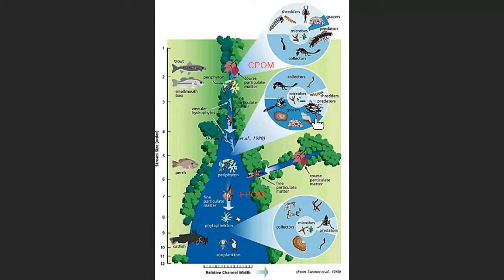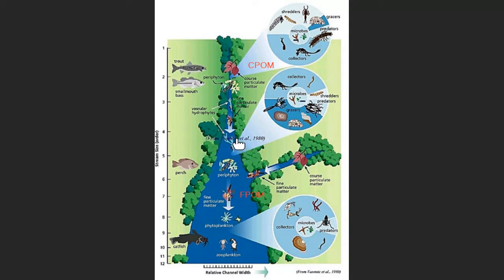Grazers are insects that graze on algae growing on substrate. You need sunlight for that algae to grow. When the canopy opens up enough in these mid-reach areas, sunlight can penetrate the water and hit the rocks so algae can grow on them. The water is still shallow enough that sunlight can reach the bottom, allowing grazers to feed on the algae community on those rocks.